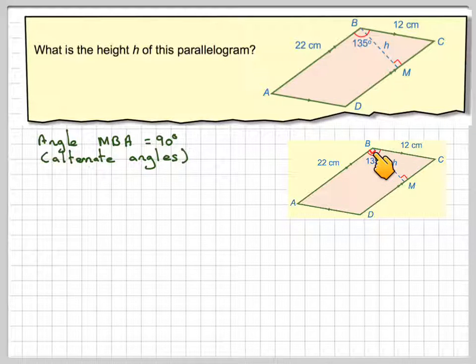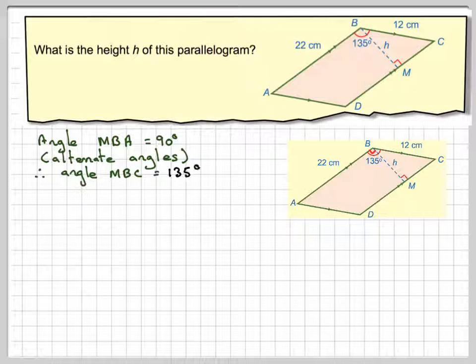So this will be 90, which will mean that we can calculate this angle here. So angle MBC is going to be 135 minus 90, which is 45 degrees.